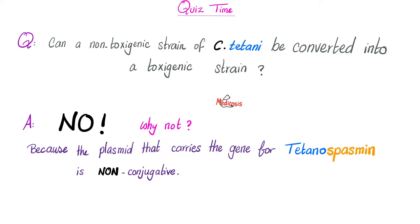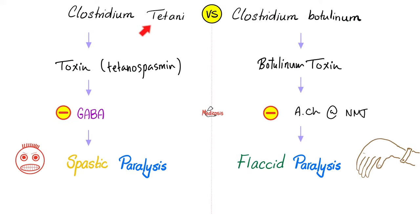Let's start by answering the question of the previous video: can a non-toxigenic strain of Clostridium tetani be converted into a toxigenic strain? The answer is no. Because the plasmid that carries the gene for the tetanospasmin is a non-conjugative plasmid — you cannot transfer the code for the toxin from one bacterial cell to another. How does tetanospasmin work? By inhibiting the release of GABA. When you inhibit the release of an inhibitory neurotransmitter, you get excitation, known as spastic paralysis.